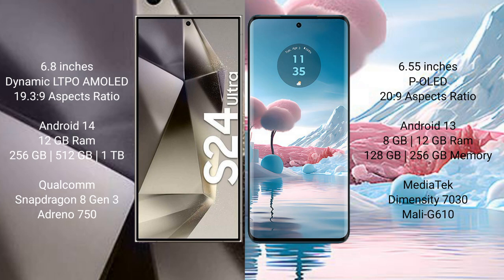Samsung Galaxy S24 Ultra comes with 12GB RAM, 256GB, 512GB, and 1TB internal storage options, powered by a Qualcomm Snapdragon 8 Gen 3 processor with GPU Adreno 750.